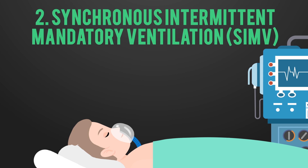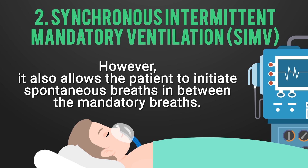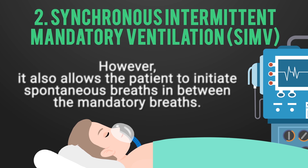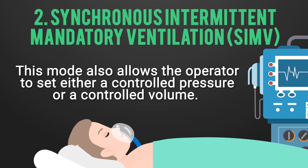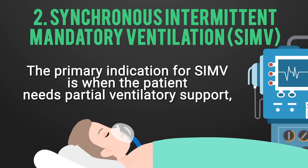The second primary mode is SIMV, or Synchronous Intermittent Mandatory Ventilation. In this mode, the ventilator delivers a preset minimum number of mandatory breaths, but it also allows the patient to initiate spontaneous breaths in between the mandatory breaths. This mode allows the operator — either the respiratory therapist or the doctor — to set either a controlled pressure or a controlled volume.